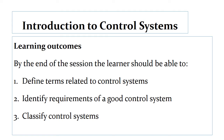Starting with introduction to control systems, the learning outcomes or objectives of the lesson will be: the learner should be able to define terms related to control systems; identify requirements of a good control system; and classify control systems.